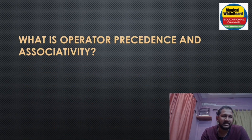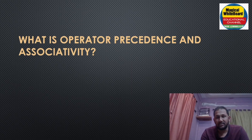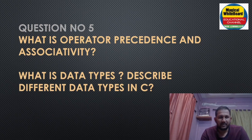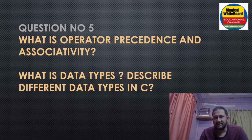Question number four: what is operator precedence and associativity? Question number five: what is a data type, and what are the different data types in C?